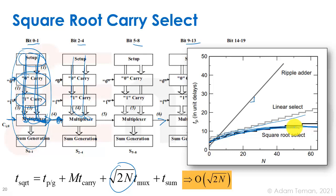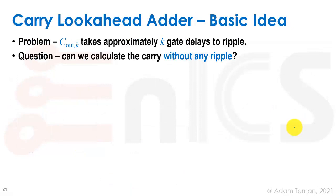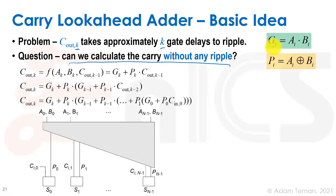These are fast but simple adders — not the fastest possible. For most arithmetic operations we can achieve O(log2(n)), which is faster than anything we've seen. The adder that achieves this is called a carry lookahead adder, also called a tree adder, and it's a concept with many different implementations. The problem with the ripple carry adder is that carry-out of stage k takes approximately k gates to propagate — can we calculate the carry without any ripple?